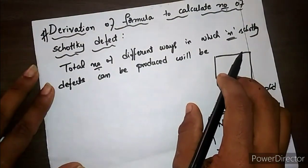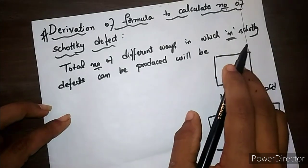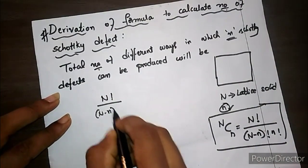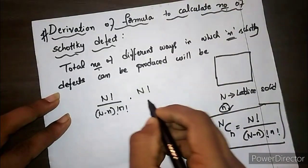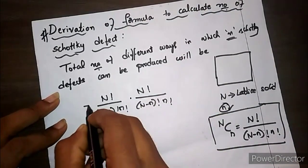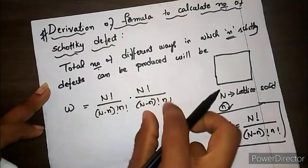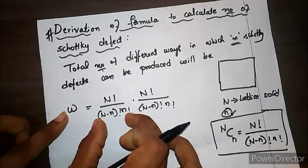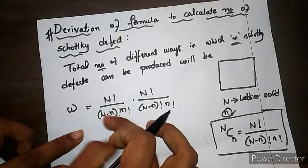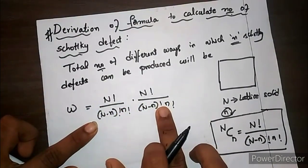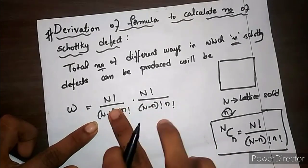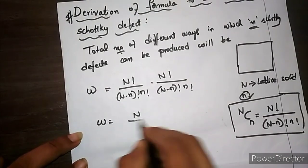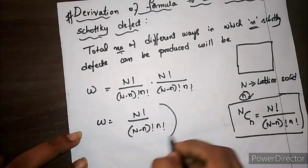In Schottky defects, the number of cation vacancies equals the number of anion vacancies, so I have to write this equation two times. The first term is for the number of different ways to create the cationic vacancy, and the second is for the anionic vacancy. Multiplying them together and combining: W equals [N factorial divided by (N minus n) factorial times n factorial] whole squared.